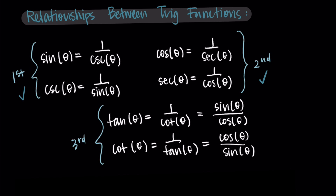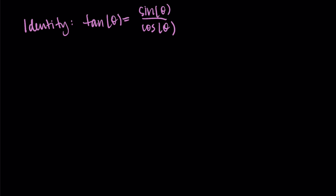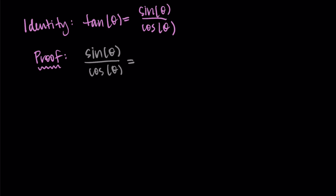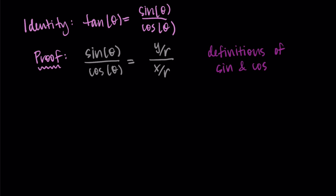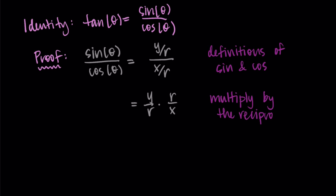Lastly, we have the tangent and cotangent identities. The one showing that tangent equals sine over cosine is interesting. The same process will follow for one over cotangent and one over tangent. Let's prove that tangent of theta is equal to sine of theta over cosine of theta. I'll start with sine over cosine and rewrite using definitions: sine is y over r and cosine is x over r. So I have y over r divided by x over r. Multiplying by the reciprocal gives y over r times r over x. The r values cancel, leaving y over x, which is how we defined tangent.